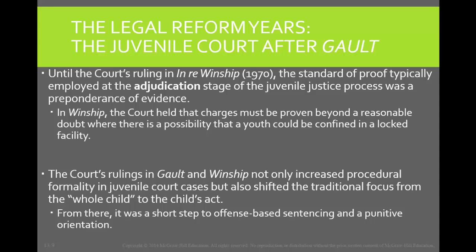Later in 1971, in McKeever v. Pennsylvania, the court held that juveniles were not entitled to a trial by jury — a decision aimed at maintaining the mission of the juvenile court as treatment. Instead, the judge would remain the sole decision maker in these cases. Adult trials use a jury of the defendant's peers to evaluate guilt, but in this instance the juvenile's peers are also juveniles and are legally unable to make those decisions. Juvenile court procedures were still characterized by an informality that most people would find unacceptable if applied to adults in criminal court.